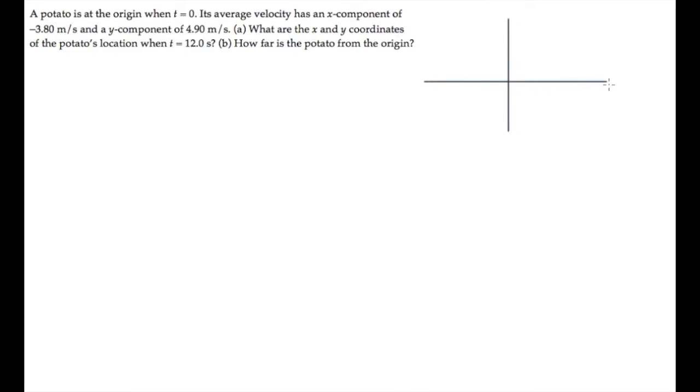The potato in this problem is at the origin of a coordinate system. We're told the x and y components of the potato's average velocity. The x component is negative, meaning it's going to the left, and the y component's positive, meaning it's going up.